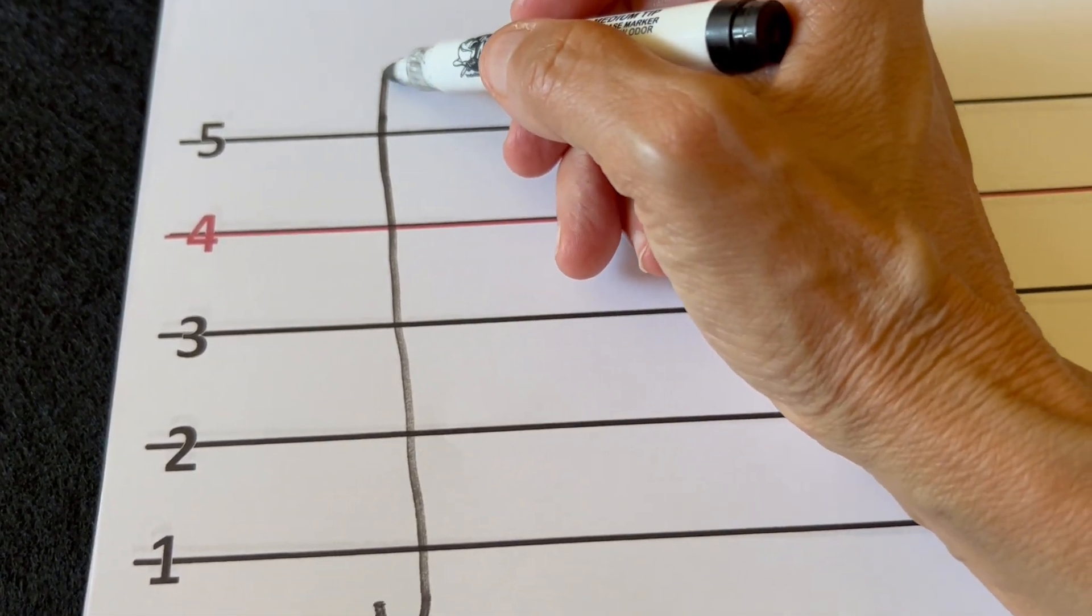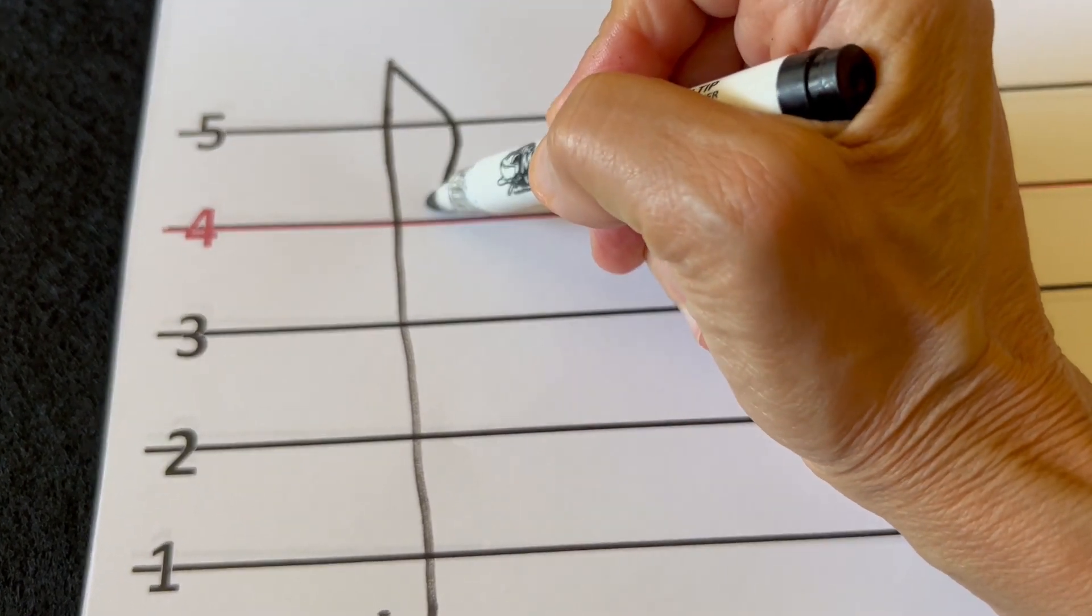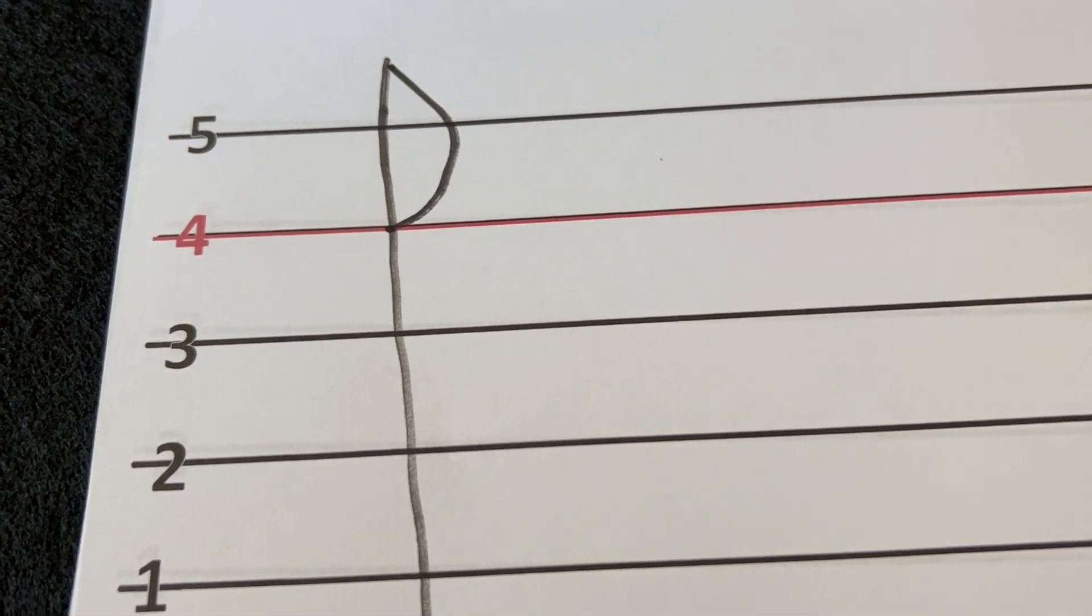And starting at the very top of the J, we're going to make the letter D and we're going to come and stop on the line four.